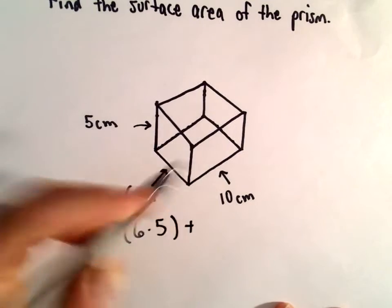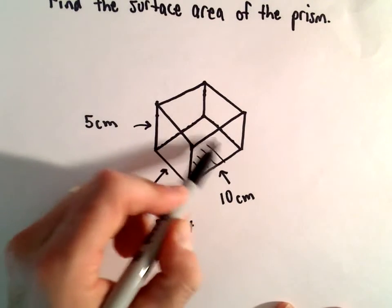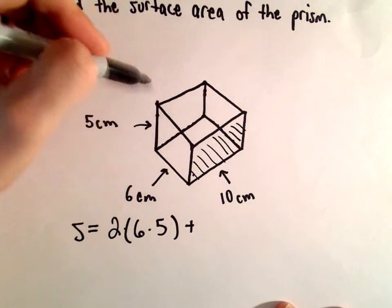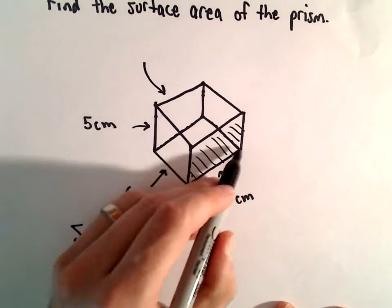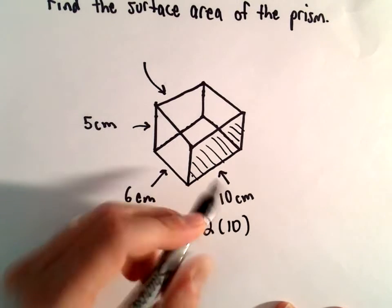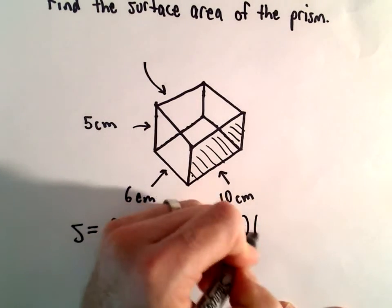five, plus now I'm going to find the area of the front part and then also the back part here. So again, I think we call this the length. So, the width is ten and the height is five.